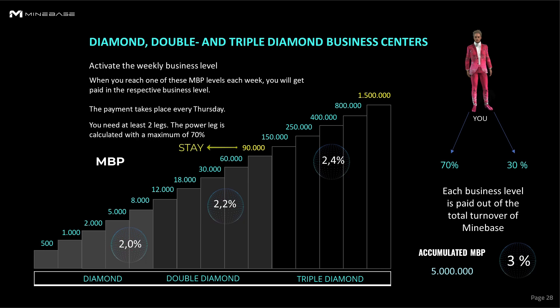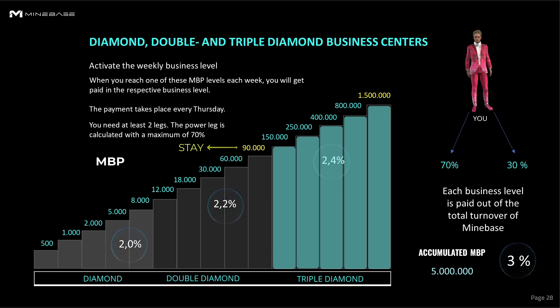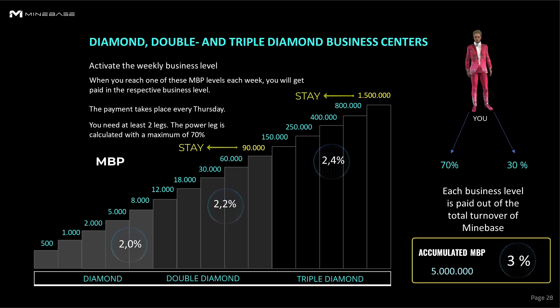However, if you reach the highest level in Triple Diamond, you will be paid there. When you reach the highest business level, you will stay there and cannot go lower. If you have accumulated 5 million MBPs, you get an additional 3% from the total turnover in this special level, shared with all others who reach this level.